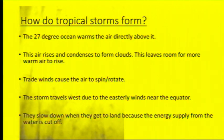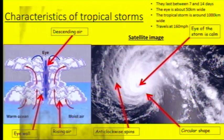When the hurricane or tropical storm gets towards land, it's going to start to slow down because the energy supply from the water is cut off.